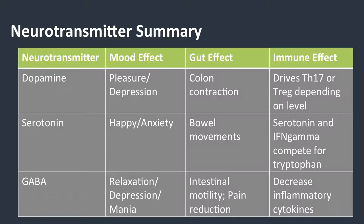The gut effects are actually profound, and you make more neurotransmitters in your gut than you do in your brain. So, what is dopamine doing in the colon? Dopamine is responsible for contraction of your colon. If you don't have dopamine, you have constipation — and we know that from Parkinson's disease. People with Parkinson's have constipation, and usually the constipation is showing up seven years before the Parkinson's ever shows up.